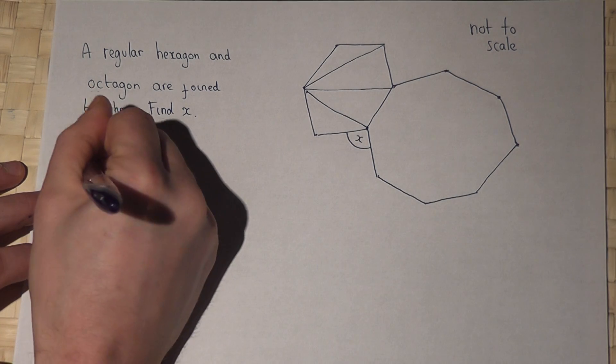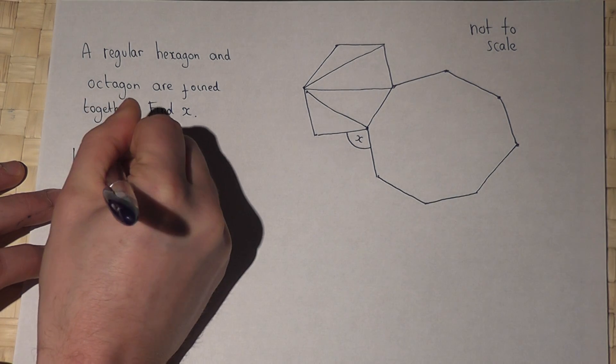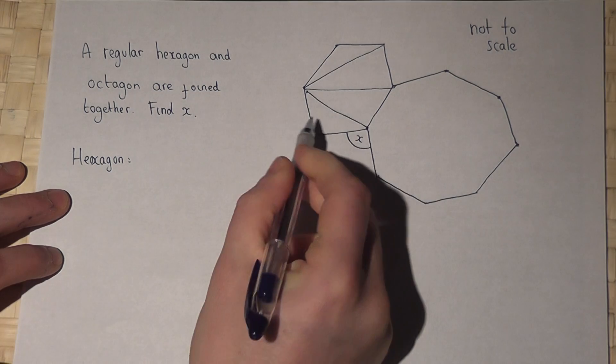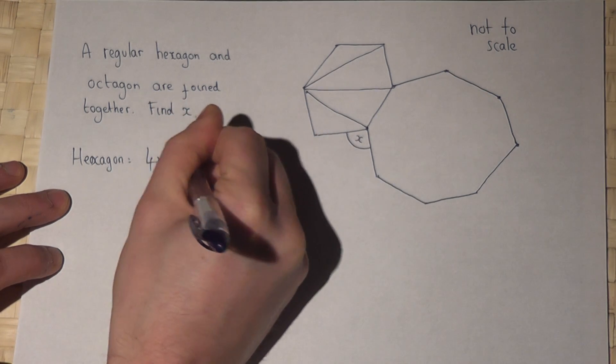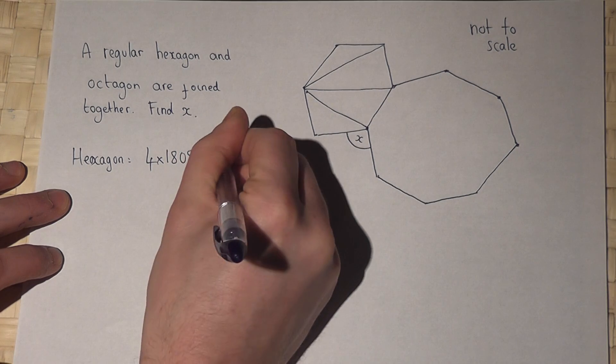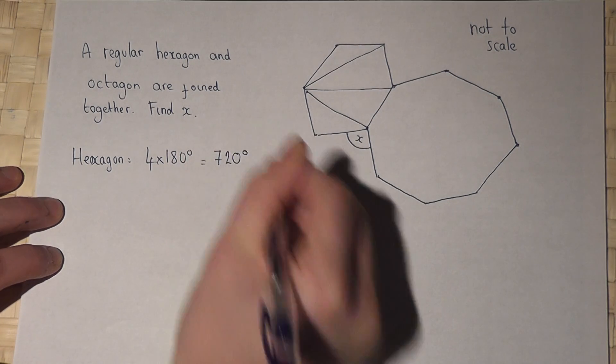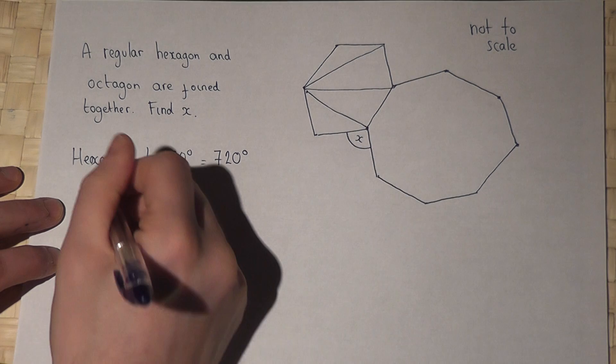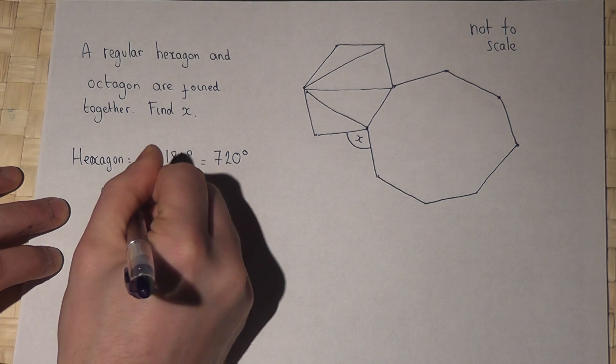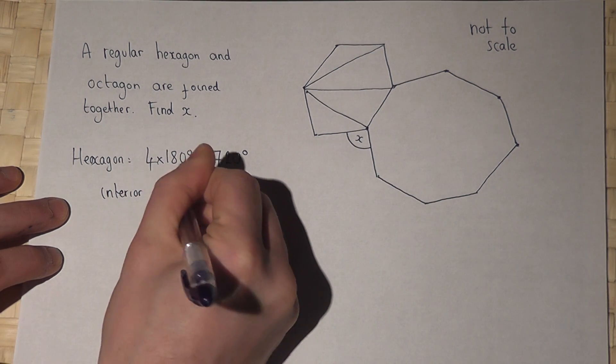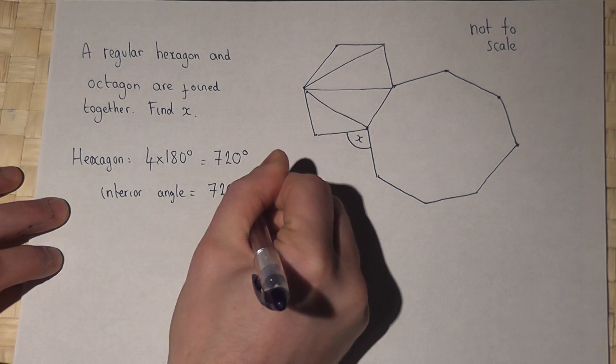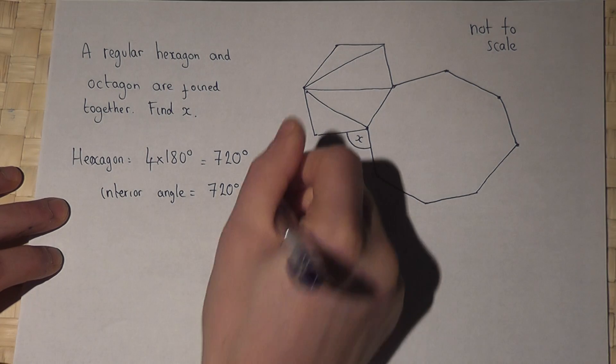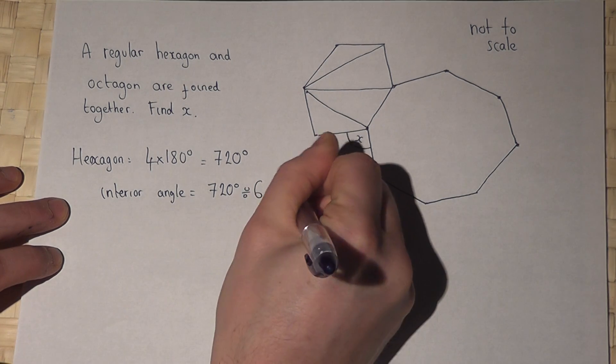So in a hexagon, the angles inside it add up to four lots of 180 degrees, which is 720 degrees. So each interior angle in there must equal 720 divided by 6, which is 120 degrees.